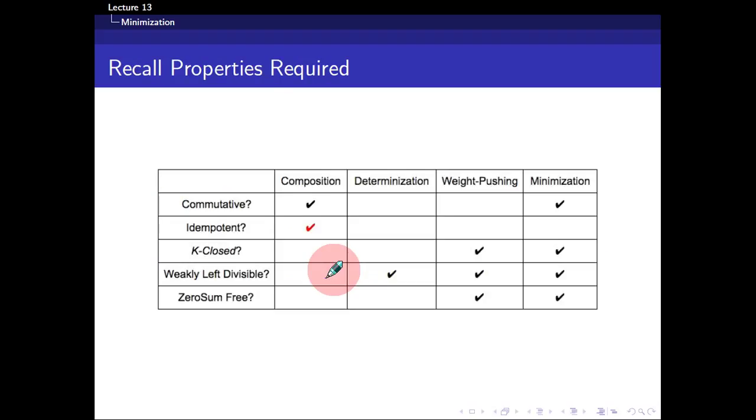Just to recap: minimization requires determinization and weight pushing, and some other algorithms as well. So determinization really requires the semi-ring to have all these four properties. I've come to the end of my lecture.